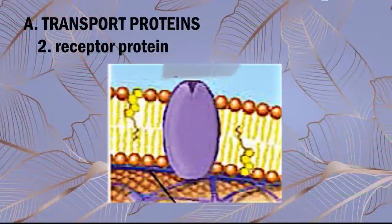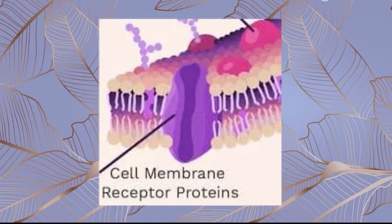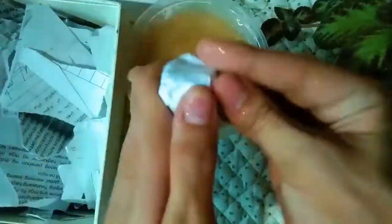Membrane receptors provide extracellular attachment sites for effectors like hormones and growth factors, which then trigger intracellular responses. In other words, they transmit signals through the bilayer. Like what we did with the channel proteins, we need the cardboard tube, but this time we'll fully cover the hole. Using the scratch paper and glue, give it a bone-like shape — or you can copy your reference or whatever shape you prefer.